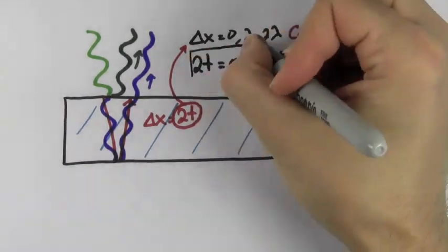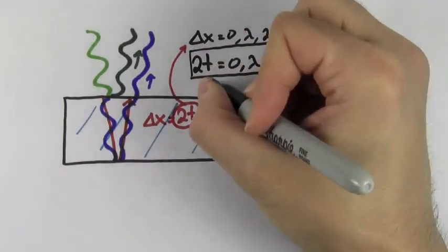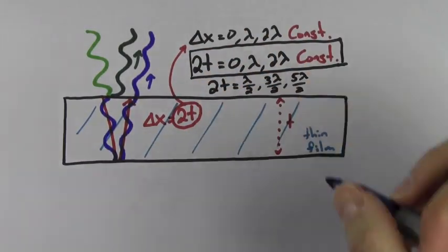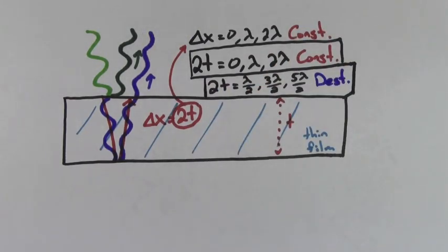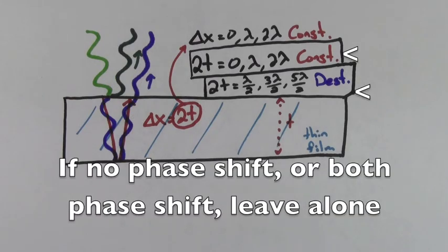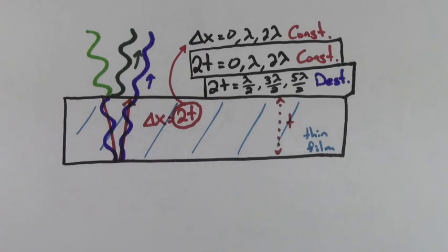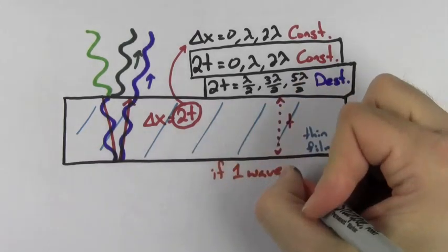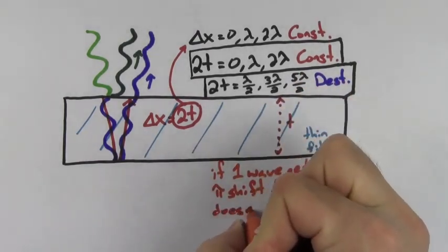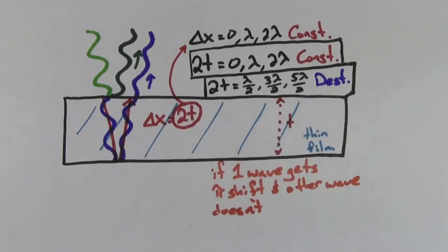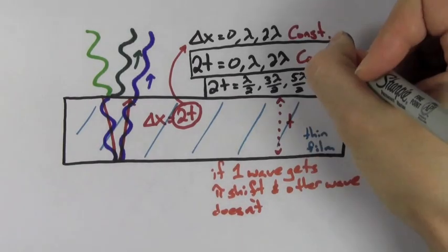The procedure for any thin film problem is to write 2t equals a whole number of wavelengths for constructive, and 2t equals half-integer wavelengths for destructive. The only remaining step is to determine whether the reflected waves received a pi phase shift. If neither wave receives a pi phase shift, or if both waves do, leave the conditions as they are. However, if one wave receives a pi phase shift upon reflection and the other does not, you must reverse the conditions for constructive and destructive interference.